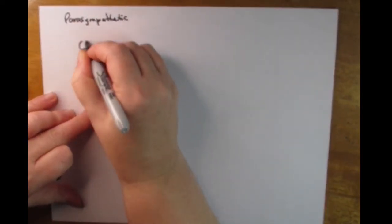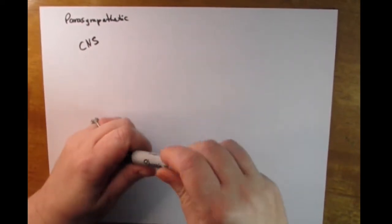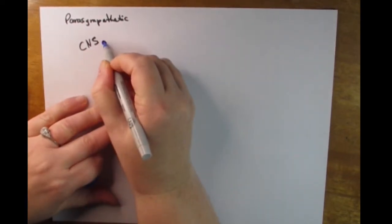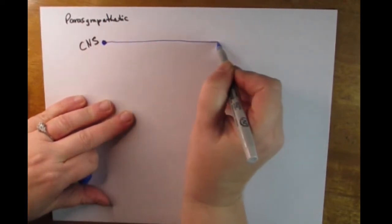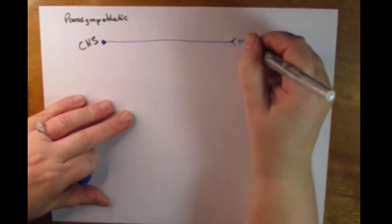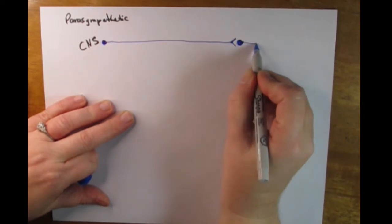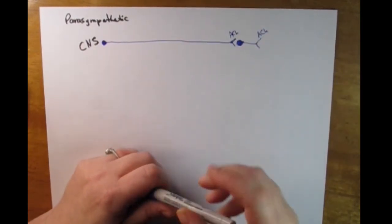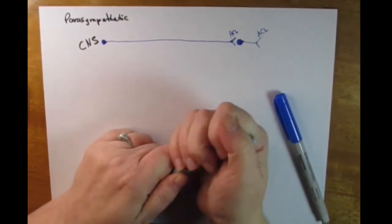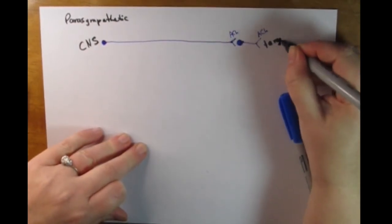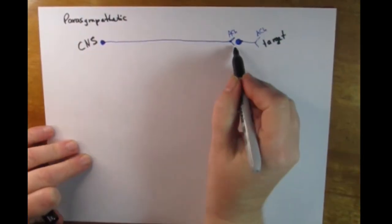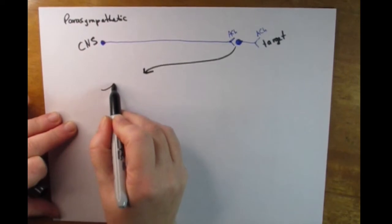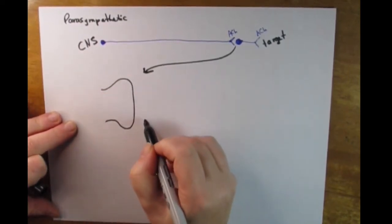The parasympathetic story is more simple, so we begin with it. We start with structures in the central nervous system, such as a portion of the cranium, a portion of the brainstem, or the S2, S3, S4 spinal nerves. We have a long preganglionic cell and a short postganglionic cell. They are both cholinergic — they both release acetylcholine at their synaptic clefts to stimulate the second cell and to cause changes in the target cells.